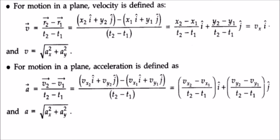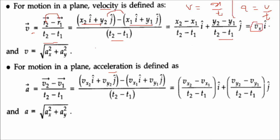For motion in a plane, velocity is displacement divided by time: v = (R2−R1)/Δt. R2 = x2·i + y2·j and R1 = x1·i + y1·j, giving velocity components vx and vy. The magnitude is v = √(vx² + vy²). Acceleration is a = (v2−v1)/(t2−t1), giving acceleration components from the respective velocity components.